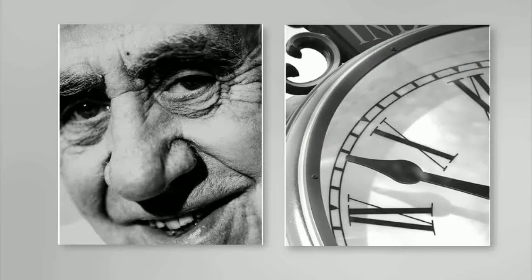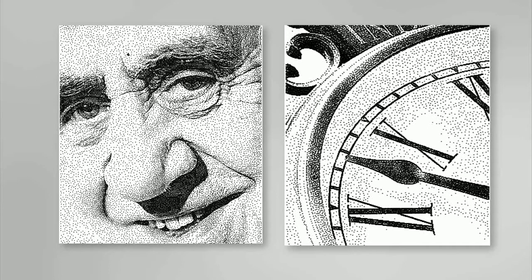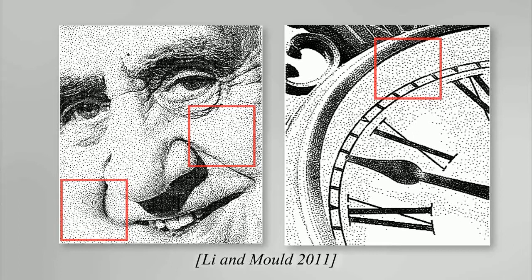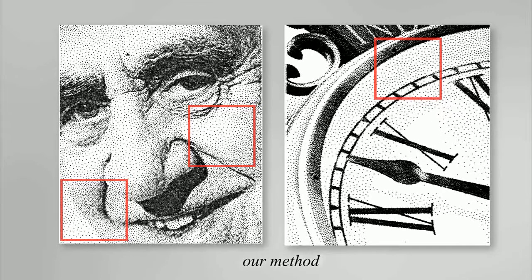Image stippling is another important application for blue noise sampling. The goal is to use stipple samples to preserve image tones and features while maintaining blue noise distributions. However, this is a hard problem — prior methods often have difficulty achieving all goals simultaneously. For example, structure-aware stippling may sacrifice blue noise properties for structures. Our method provides better quality; notice the more uniform distributions of our results.